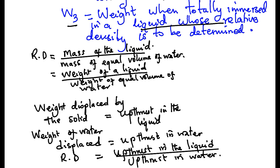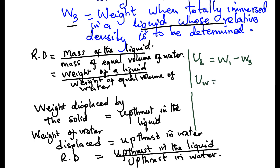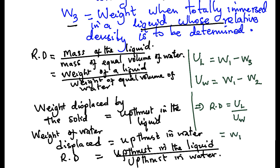From the values obtained above, one can therefore calculate the relative density by taking up thrust in the liquid equal to W1 minus W3, while up thrust in water equals W1 minus W2. Implying that relative density is up thrust in the liquid divided by up thrust in water, which is W1 minus W3 over W1 minus W2.